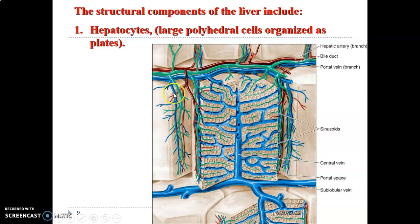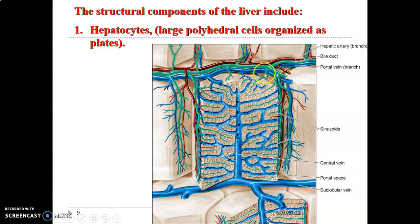Looking at the histological section: you can appreciate the sinusoids, the hepatocytes radiating outwards, and the central vein. When you do a cross-section of the liver, you see the central vein with hepatocytes radiating from it, sinusoids in between the rays of hepatocytes, and biliary canaliculi that pick up bile from hepatocytes and unite to form the bile duct. The portal triad is visible within the connective tissue around the hepatic lobule, containing the portal vein, bile duct, and hepatic artery, each giving branches to all sides of the hepatic lobule.